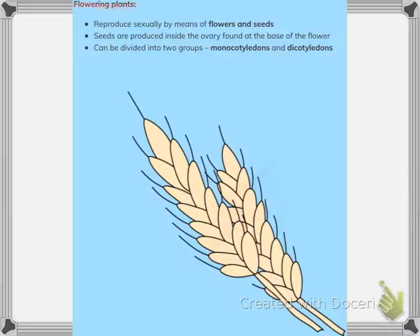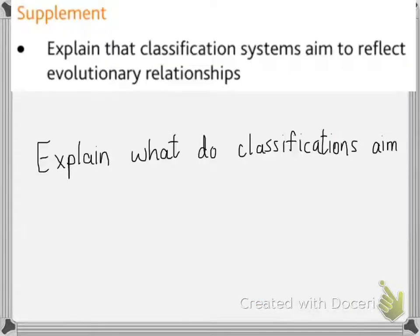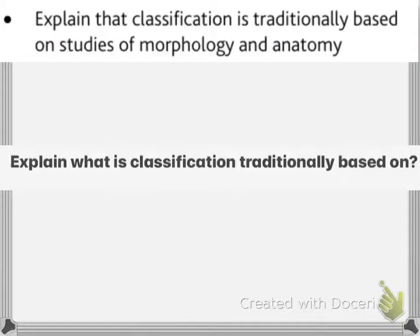Flowering plants reproduce sexually by means of flowers and seeds; seeds are produced inside the ovary at the base of the flower. Flowering plants are divided into monocotyledons and dicotyledons. Classification aims to reflect evolutionary relationships and is traditionally based on studies of morphology and anatomy. Morphology refers to the overall form and shape of the body, such as whether they have legs or wings.